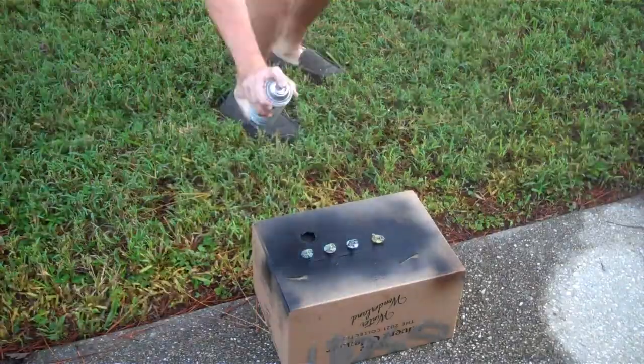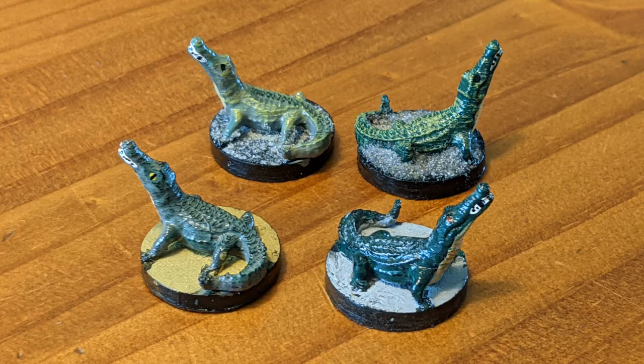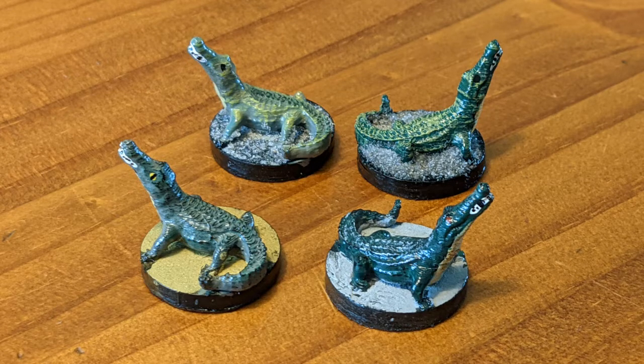The next day, I sprayed on three quick coats of gloss clear coat with just a minute or two between each layer. This gives them a bit of shine and will protect the acrylic paint and helps to lock down the flocking to the bases.